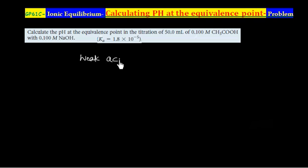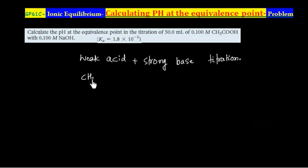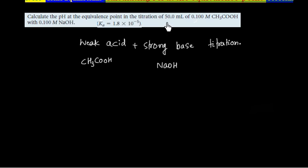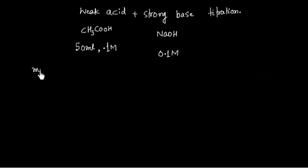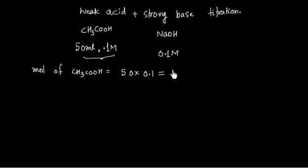We have a weak acid plus strong base titration. The weak acid is acetic acid, CH3COOH, and the strong base is NaOH. The acetic acid is given as 50 mL with concentration 0.1 M. We can calculate moles of acetic acid: molarity times volume = 50 × 0.1 = 5 millimole.